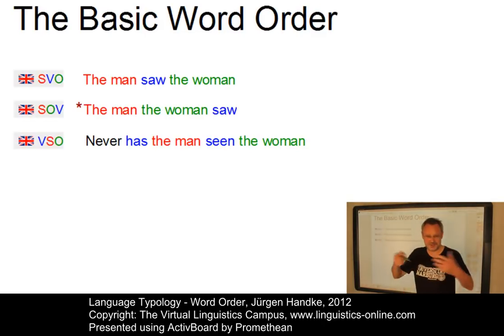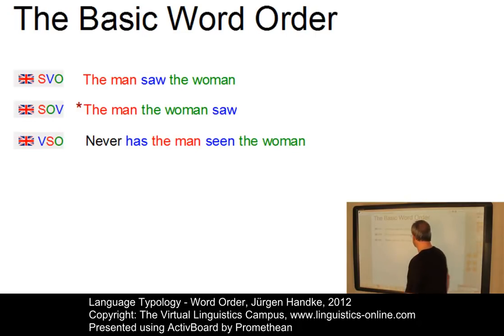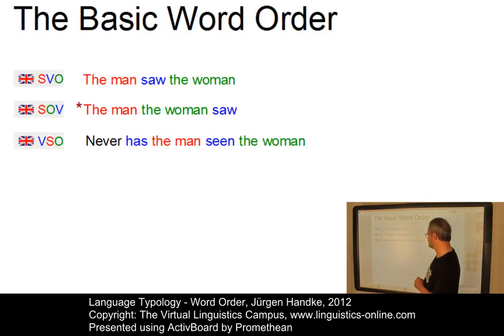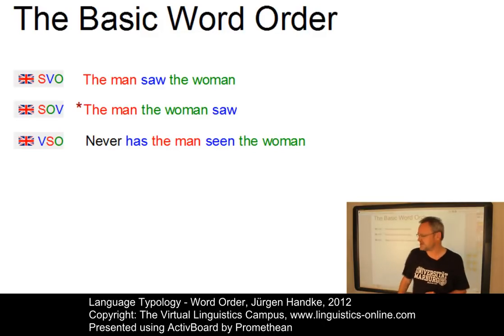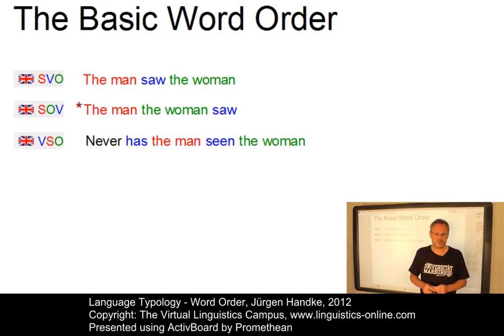VSO, the third of the majority types, is possible in present-day English: 'Never has the man seen the woman.' However, there is an adverbial that is fronted. We have NEVER (the adverbial), then HAS (the inflected component of the verb), the man (the subject), and the woman (the object). However, this construction is restricted in many ways — the adverbial has to be negative. 'Never has the man seen the woman' works, but 'very often has the man seen the woman' does not.